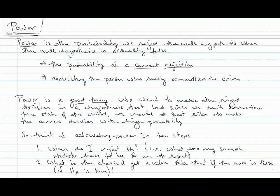This video is about power. The purpose is to make up for lost class time and to go over what happens when we change various aspects of a problem and see how that influences power. Power is the probability that we reject the null hypothesis when the null hypothesis is actually false. It is a probability of a correct rejection—like the probability of convicting a person who really committed the crime. Power is always about probability.